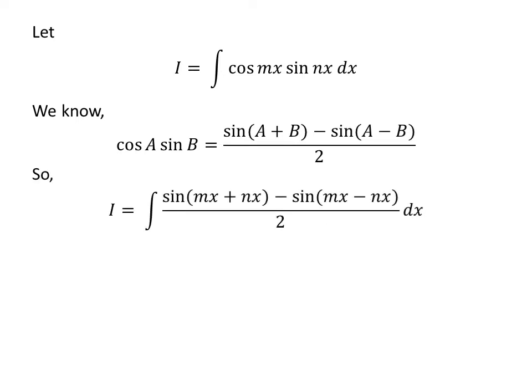I have replaced cosine of m times x times sine of n times x in the integral by its value as per the above trigonometry identity. So I is equal to the integral of sine of m times x plus n times x, minus sine of m times x minus n times x, upon 2, with respect to x.